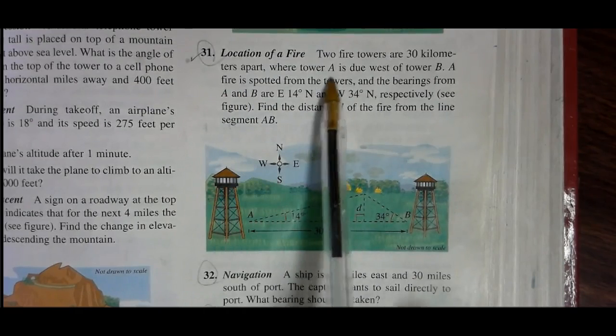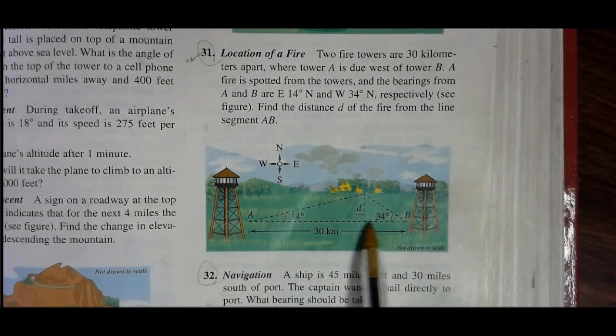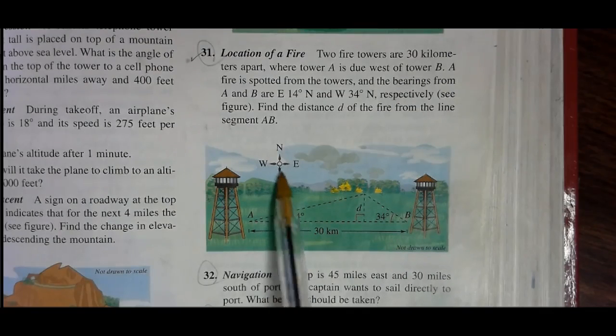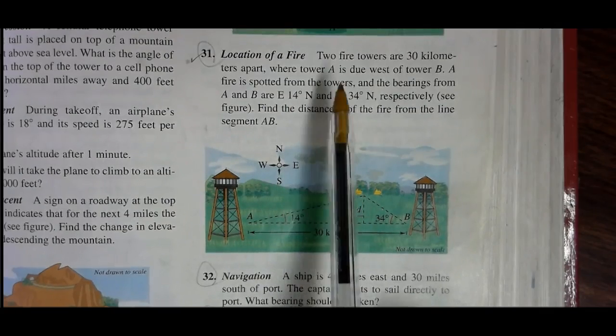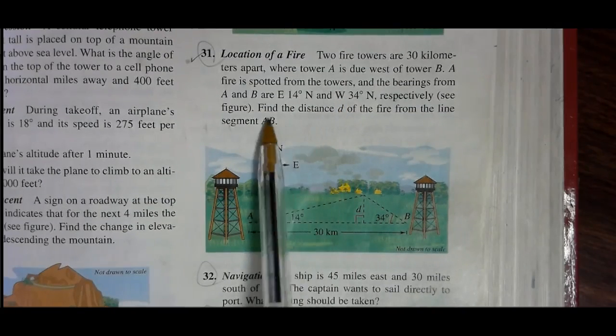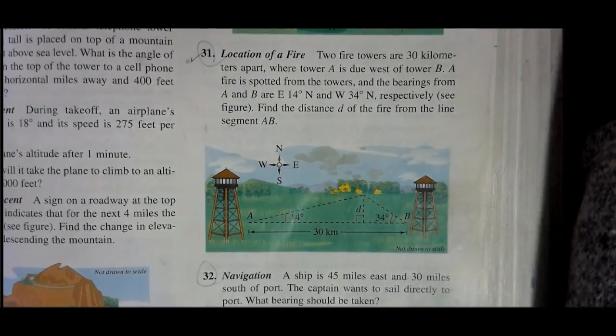Tower A is due west of tower B. So this picture you're familiar with. Make sure you copy the problem in your notes and so we take this picture and redraw it.